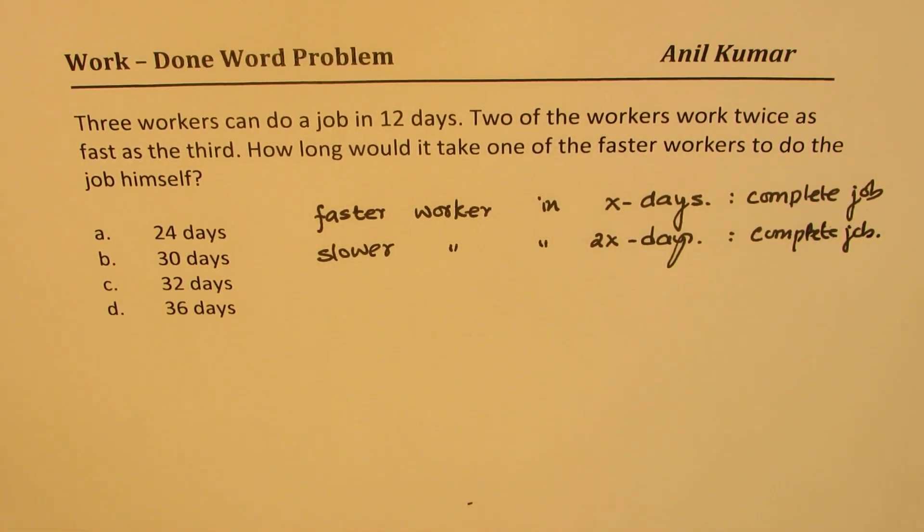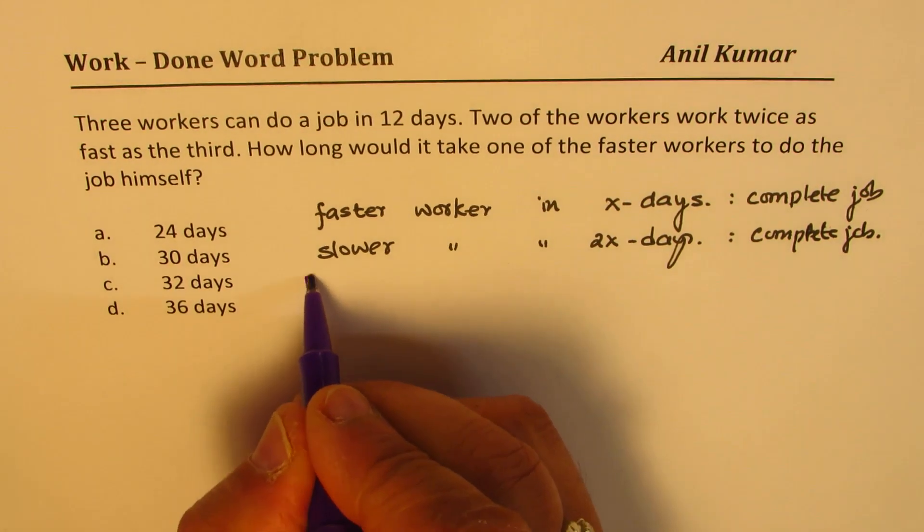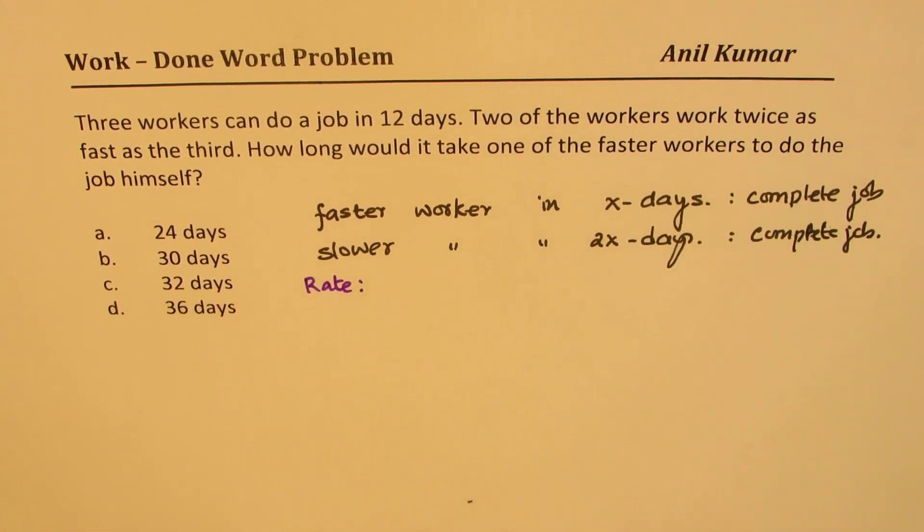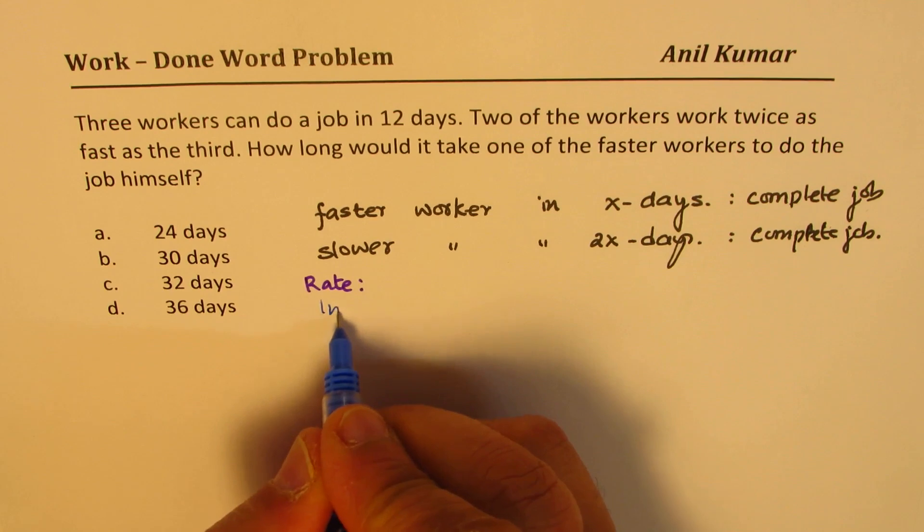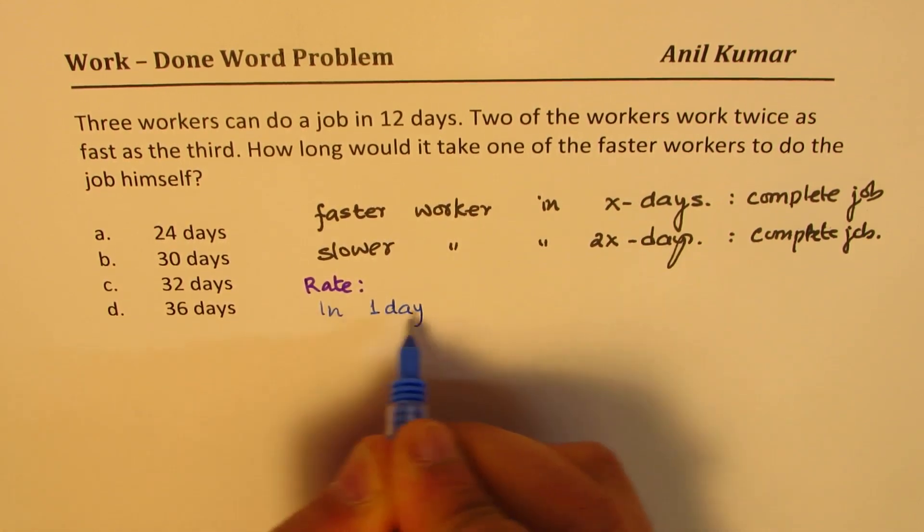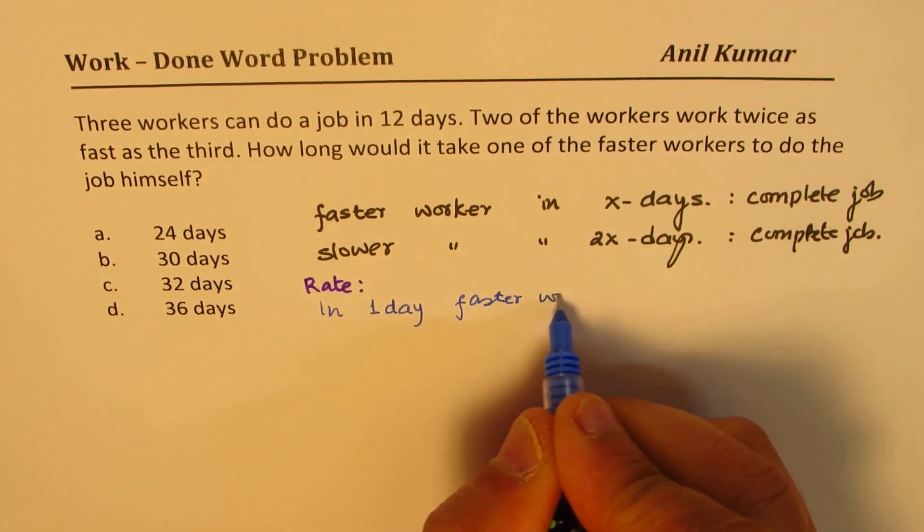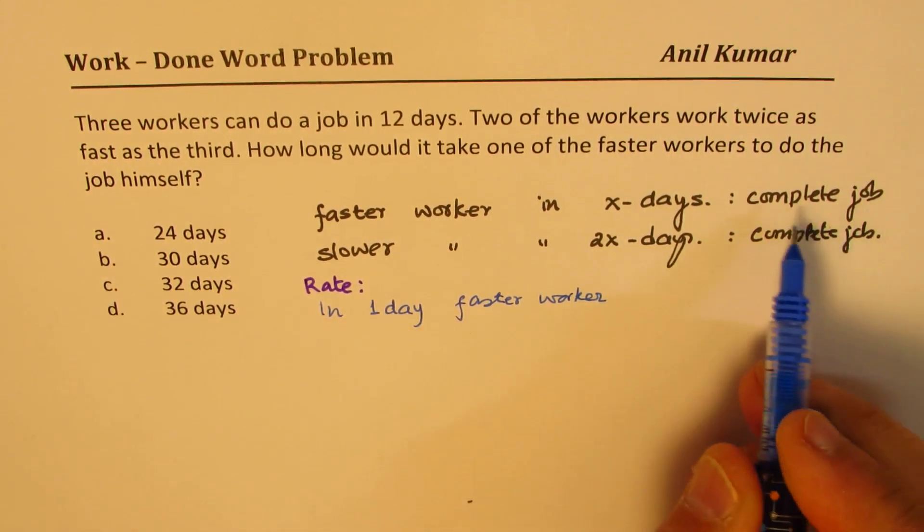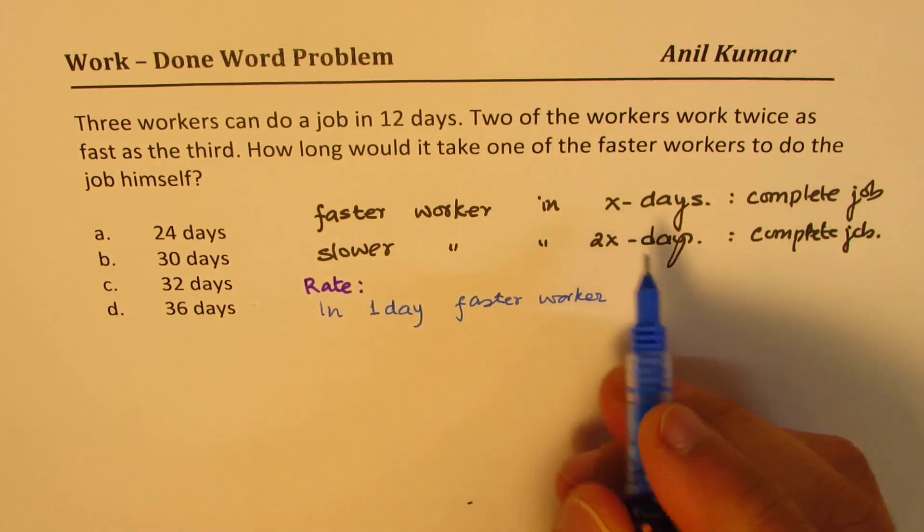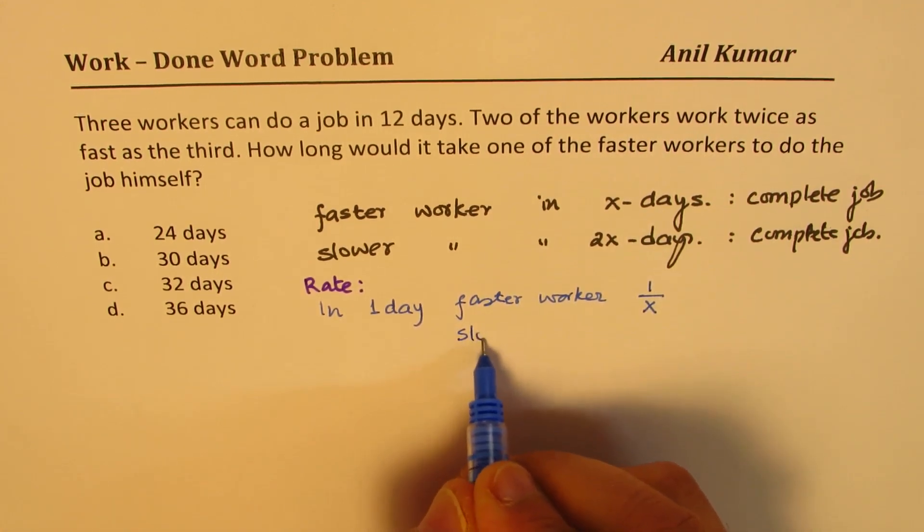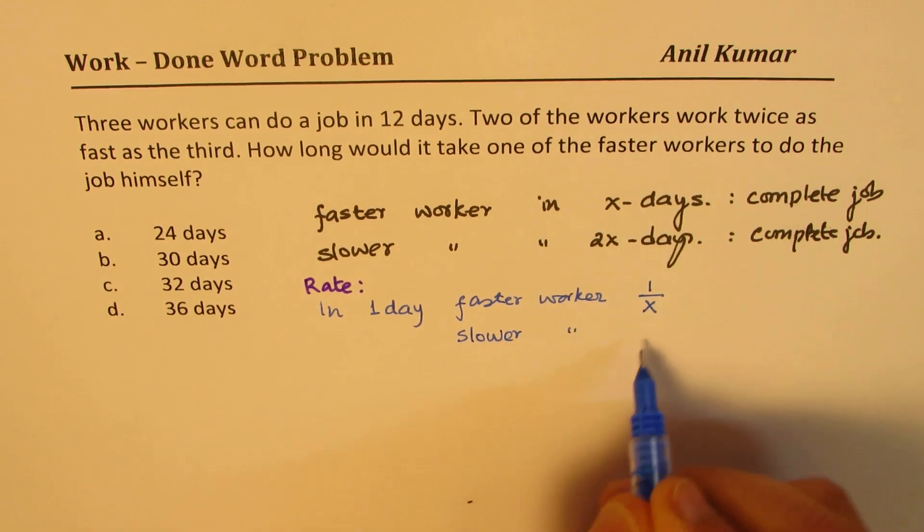Now you have to think about rate. Whenever you're doing work-done, you have to think about rate. Rate basically means in one day how much job can be done. In one day, the faster worker will do how much? The complete job is done in X days, so in one day 1/X of the complete job. For the slower worker it will be 1/2X in one day.